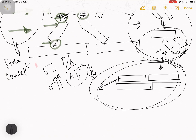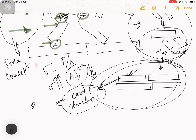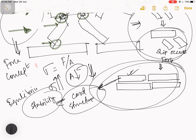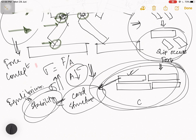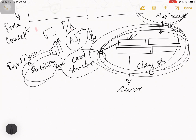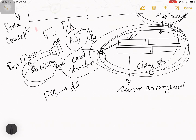Why does this happen? Because every card structure needs some stability. Everyone needs equilibrium. Due to the need for equilibrium, every particle seeks stability. The dispersed arrangement is the most stable position of a clay structure. After reaching stability, if any force is applied, they can resist it to some extent. In this way, they make a denser arrangement.